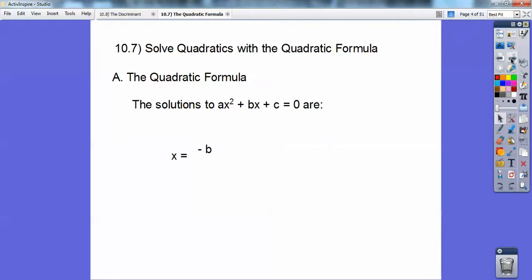Well, check this out, you guys. I can do it like this. Okay, ready? x equals opposite b, plus or minus, square root of b squared minus 4ac, all over 2a. Pretty swift, huh? Let's try it again. x equals opposite b, plus or minus, square root of b squared minus 4ac, all over 2a.